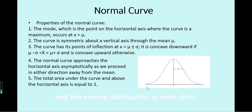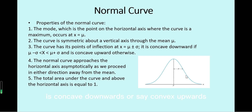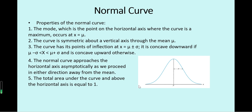The normal distribution is symmetric with no skew. For values between mu minus sigma and mu plus sigma, the curve is concave downward or convex upward. For values less than mu minus sigma and greater than mu plus sigma, the curve is convex downward or concave upward.